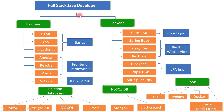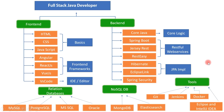Apart from front-end and back-end skills, as a full stack Java developer you should also know databases. Common relational databases include MySQL, PostgreSQL, SQL Server, and Oracle. For NoSQL databases, there are MongoDB, Elasticsearch, Cassandra, and CouchDB. There are many databases available, but these are the most commonly used ones.